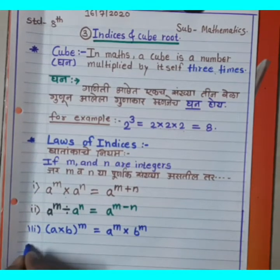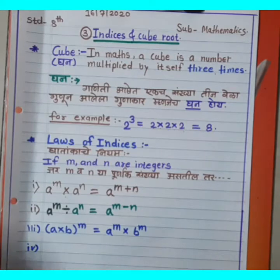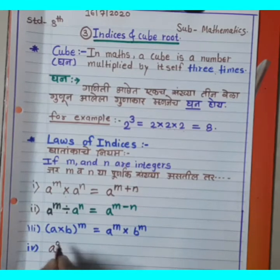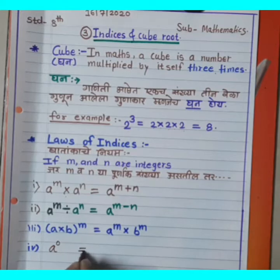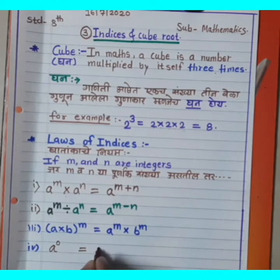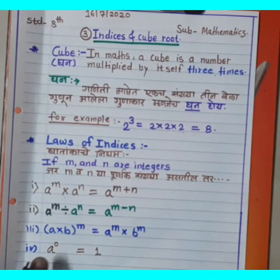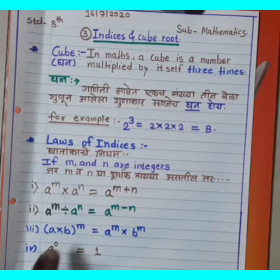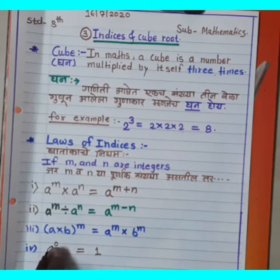Fourth Rule: A raise to 0 is always equal to 1. Any number raised to the power 0 equals 1. A^0 = 1.